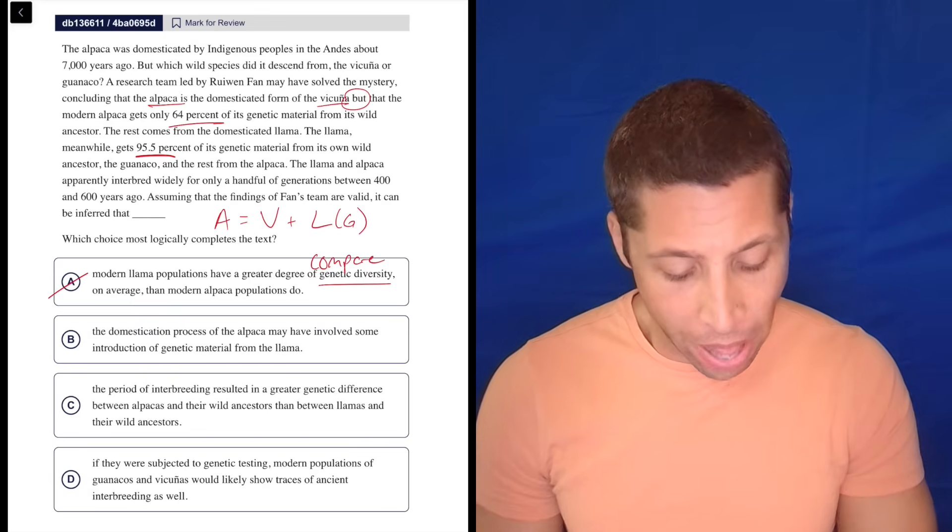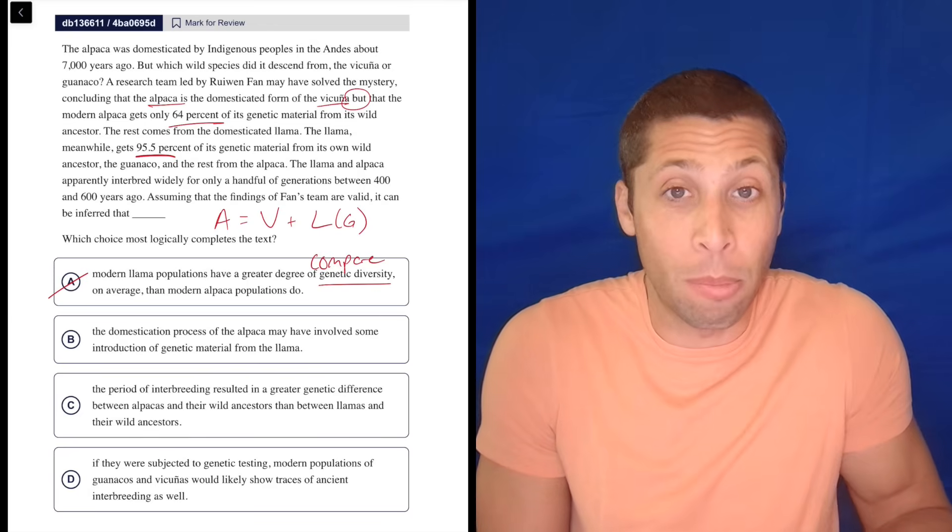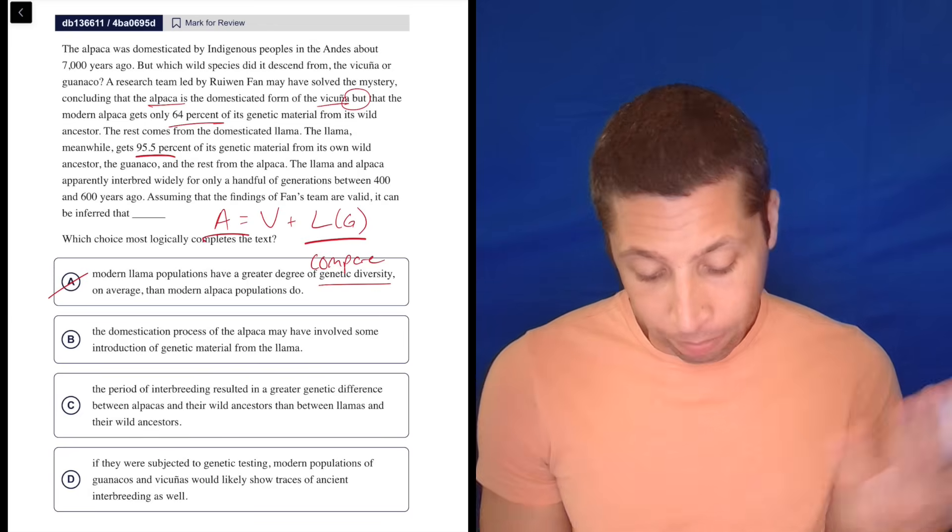B, the domestication process of the alpaca may have involved some introduction of genetic material from the llama. Well, that seems like my dumb summary, right? So, yeah, there's a llama in the alpaca. Seems good.